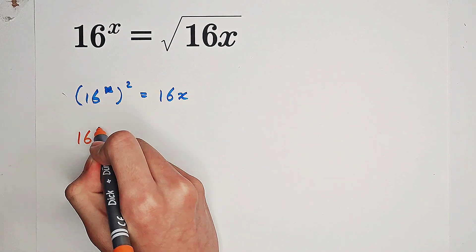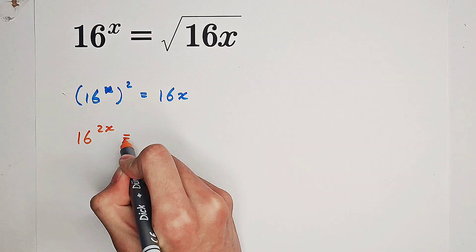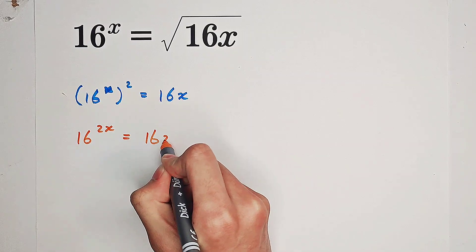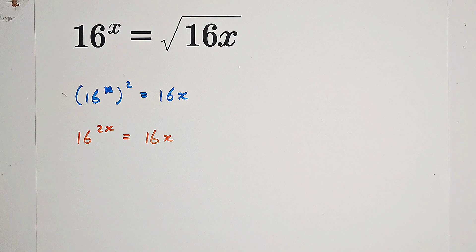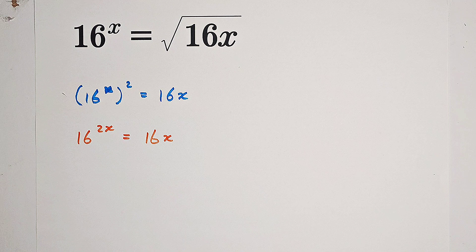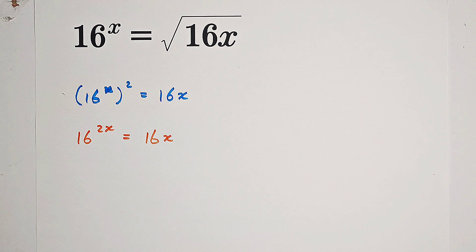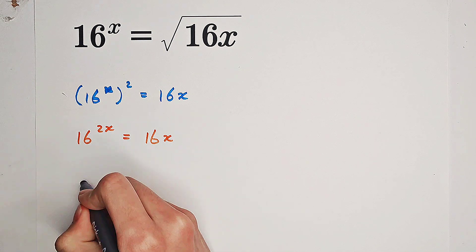Now we get 16 to the power of 2 times x equals 16x. And now what I'm going to do is take a power of 1 over 16x on both sides.